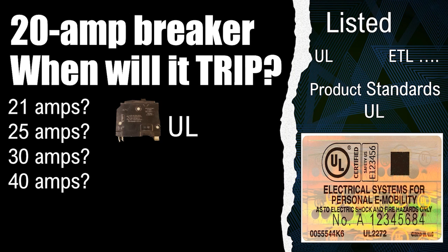So UL takes and writes the standard. They come up with things like trip thresholds, interrupting ratings, size and spacing, and then they set all the rules around those.